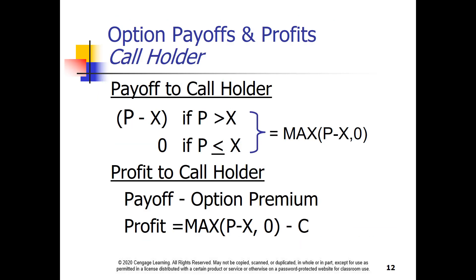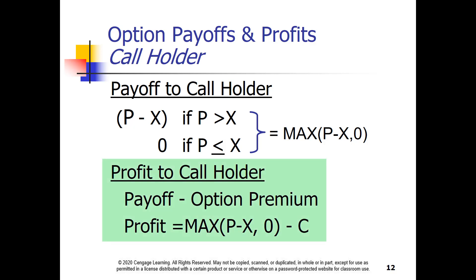We'll start with the payoff and profit to the holder of a call option. Regardless of the ending stock price, the payoff to the holder of a call can never be less than zero. If the option is worthless, it won't be exercised. If the stock price is above the exercise price at expiration, then the payoff is simply the stock price minus the strike price, P minus X. We have to account for the premium we paid for the option contract, so our net profit equals the payoff minus the premium. The payoff to a call holder can never be negative, but the profit or loss can be negative, but never more than the premium paid.